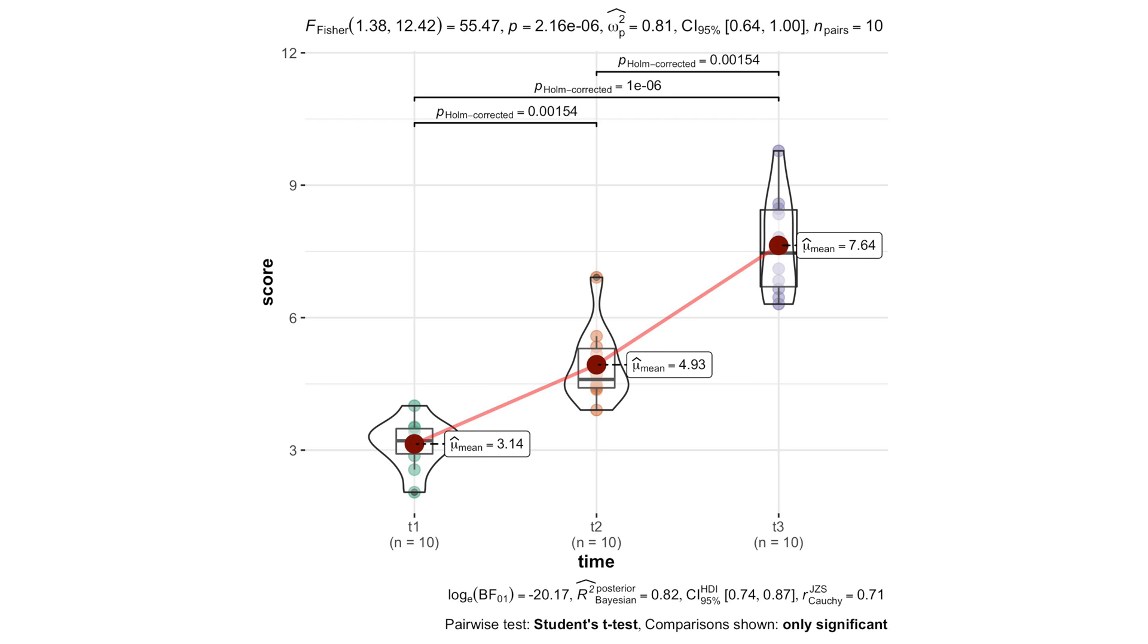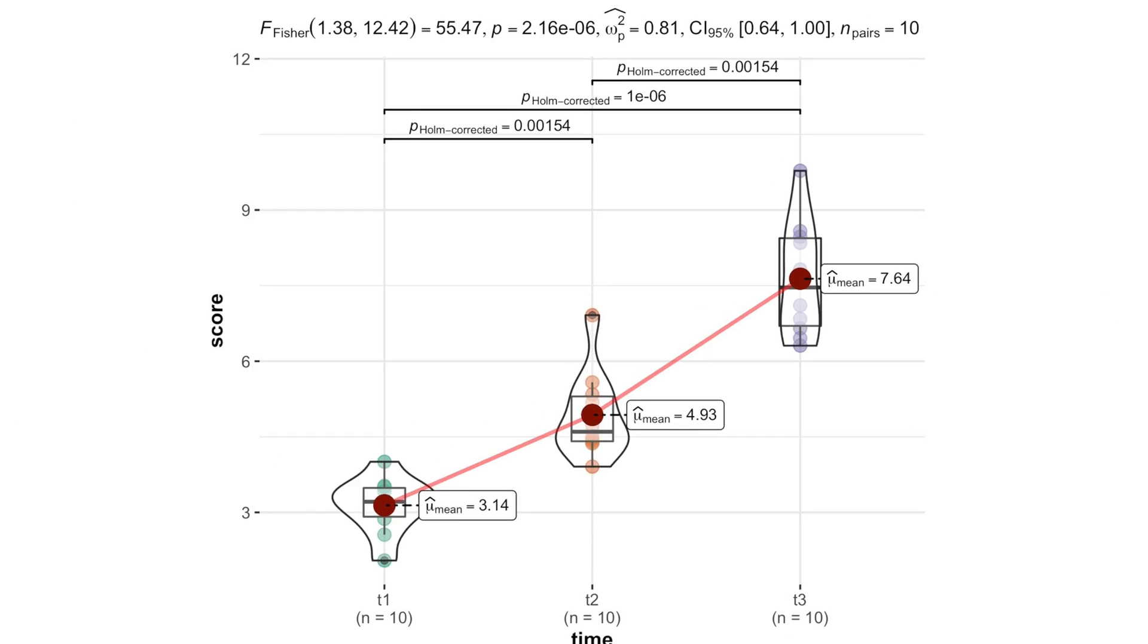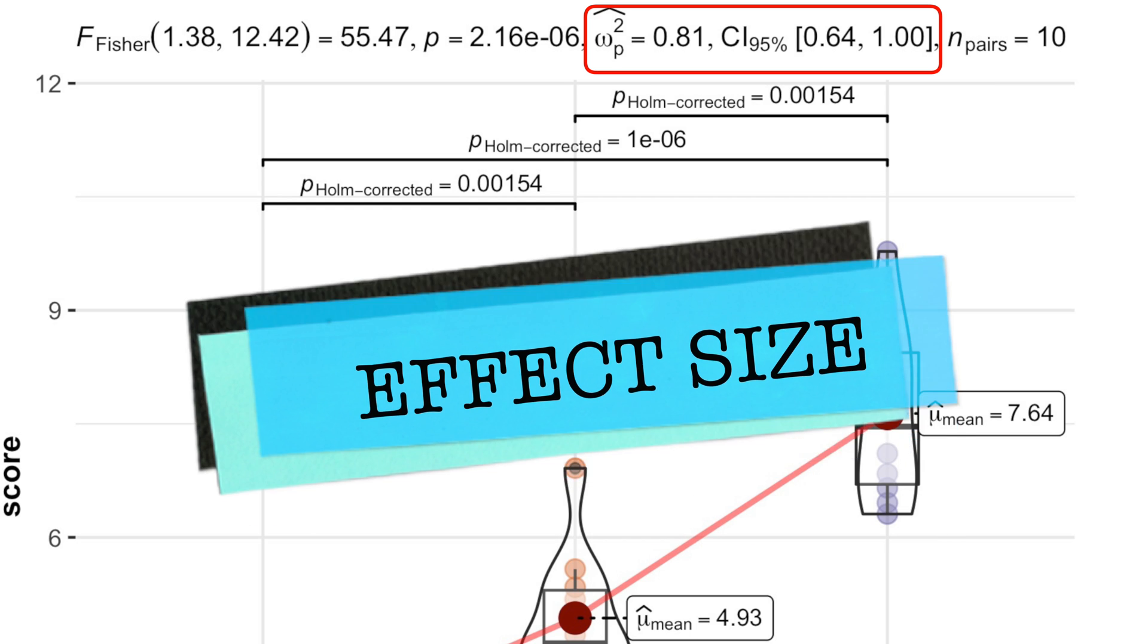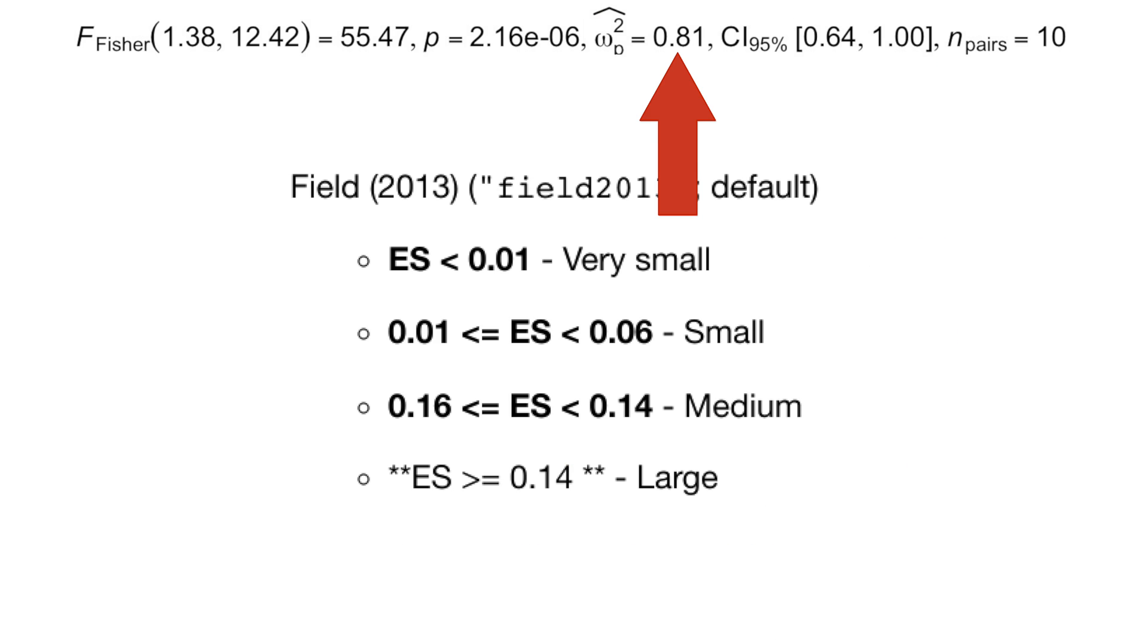But how strong is the effect of sports on self-esteem? P-value cannot tell that. A p-value only tells you that there is an effect from training, but not how strong this effect is. Fortunately, ggwithinstats provides partial omega-squared with 95% confidence intervals as the measure of the effect size for repeated measures ANOVA, which shows that training effect of 0.81 is large.